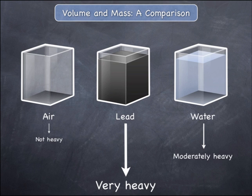From this example, you should see the difference between volume and mass. Whilst different objects may have the same volume, their masses may be very different. In the same way, two objects that have the same mass may have very different volumes.